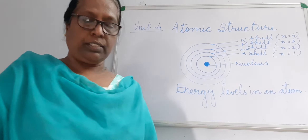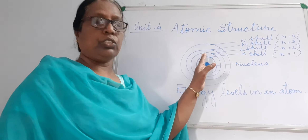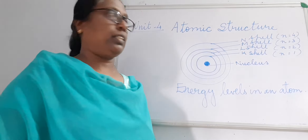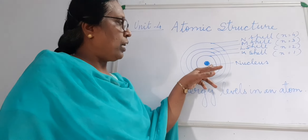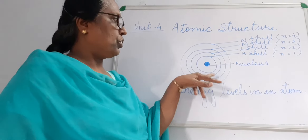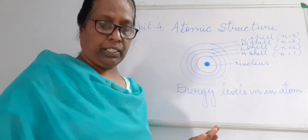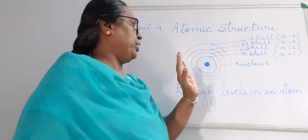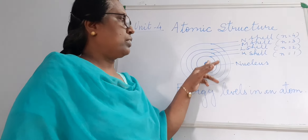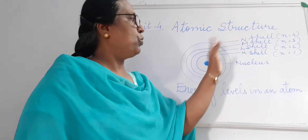The energy of an orbit increases as the shell number increases. Each shell has its own energy level. The shell which is close to the nucleus has less energy, and the shells which are away from the nucleus will have more energy. As the shell number increases, the energy also increases as it moves away from the nucleus.